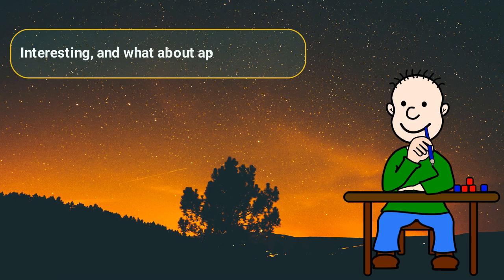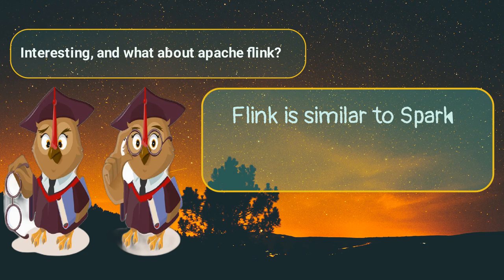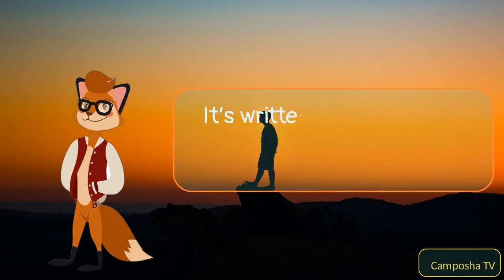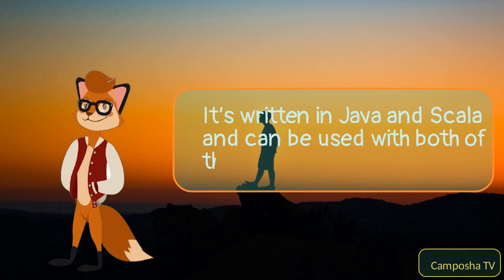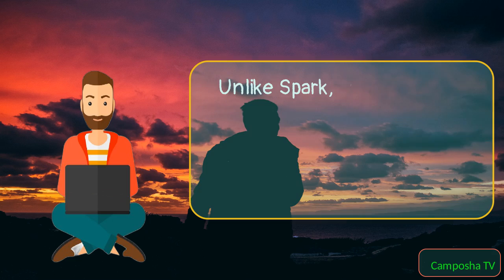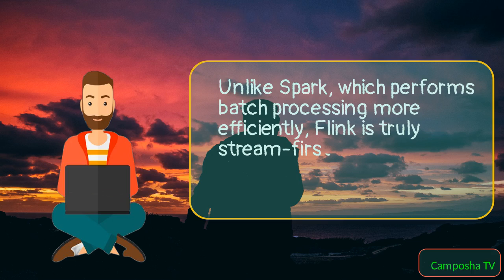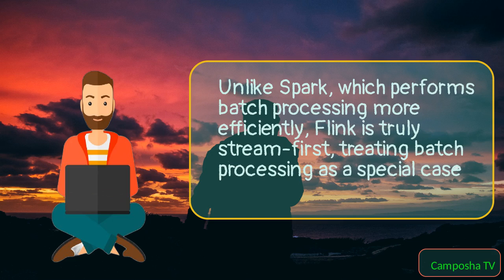What about Apache Flink? Flink is similar to Spark in that it's also used for real-time processing. It's written in Java and Scala and can be used with both of these languages. Unlike Spark, which performs batch processing more efficiently, Flink is truly stream-first, treating batch processing as a special case of stream processing.